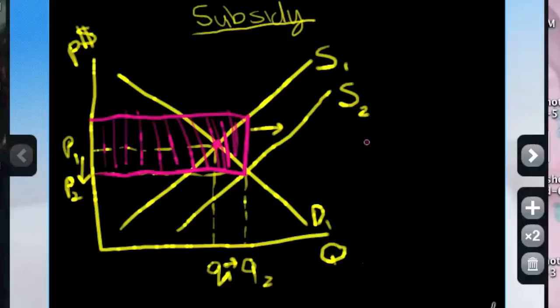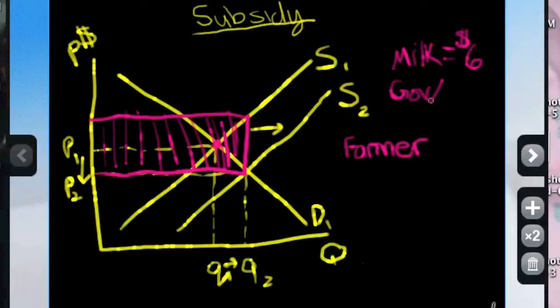So the price received by the producer—let's say for example, the farmer is producing milk and the milk is too expensive. The milk costs $6 and the public slash the government wants it to be $4.